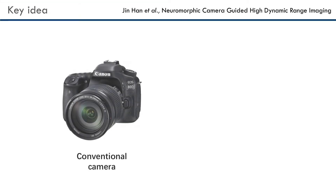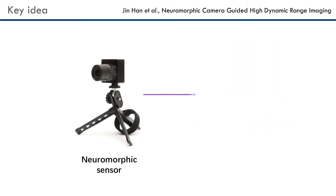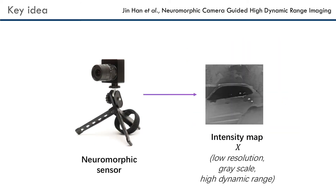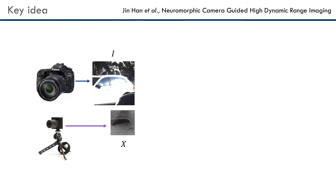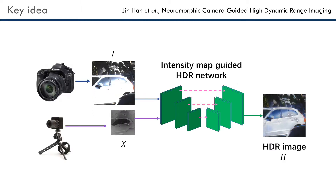Conventional RGB cameras capture LDR images, while neuromorphic cameras can output intensity maps with high dynamic range. We propose a method to fuse I and X to get a high quality HDR image.